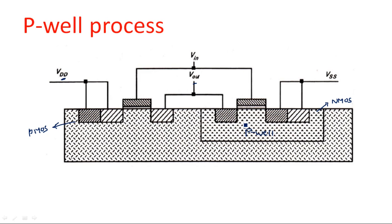The NMOS transistor in the P-well is fabricated between the output and ground, so VSS is nothing but ground. The input is connected to both gate terminals — the gate of the PMOS and the gate of the NMOS are both connected to the input. This is the structure of the P-well fabrication process, where we have only one well of P-type, diffused on an N-type substrate.